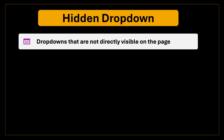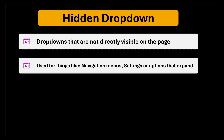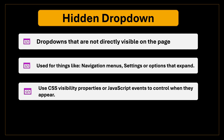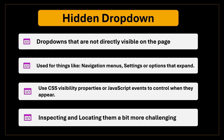Hidden drop-downs are menus that aren't visible on the page by default. They require a specific action like hovering over an element or clicking a button to make them appear. You'll often find these used in navigation menus that only show up when you hover over a specific area, or settings and options that expand after clicking an icon or button. These drop-downs rely on CSS visibility properties or JavaScript events to control when they appear, which makes inspecting and locating them more challenging than standard drop-downs.